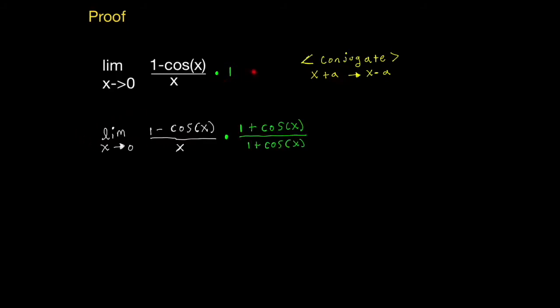I rewrote the value of 1 as 1 plus cosine of x divided by 1 plus cosine of x. Again, using the idea of the conjugate: 1 minus cosine of x, the conjugate would be 1 plus cosine of x.